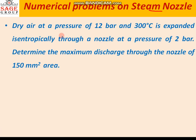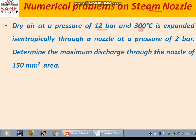We are taking the first problem. Dry air at a pressure of 12 bar and 300 degree centigrade is expanded isentropically through a nozzle at a pressure of 2 bar. Determine the maximum discharge through the nozzle of 150 square millimeter area.